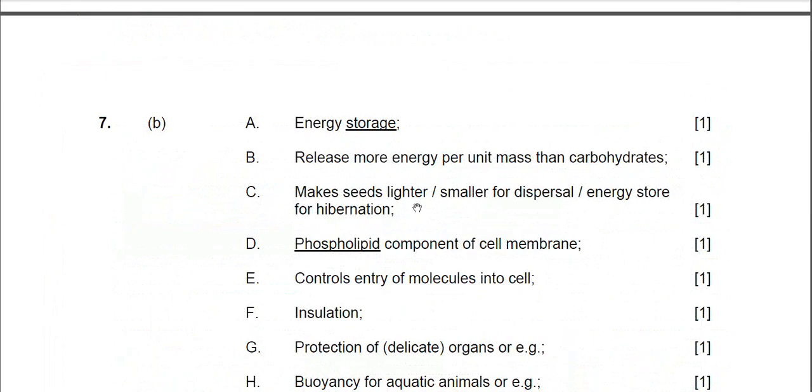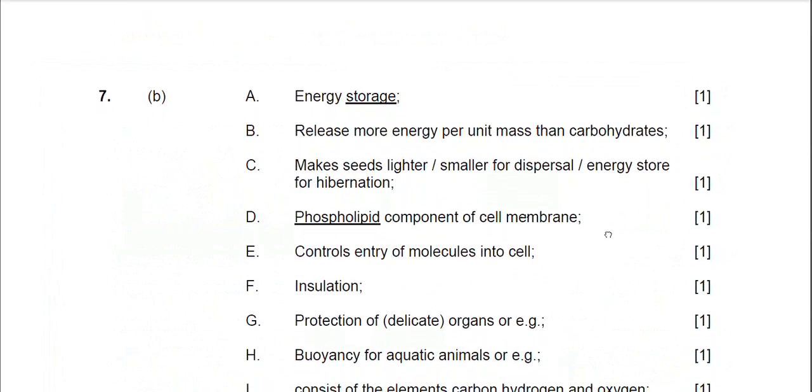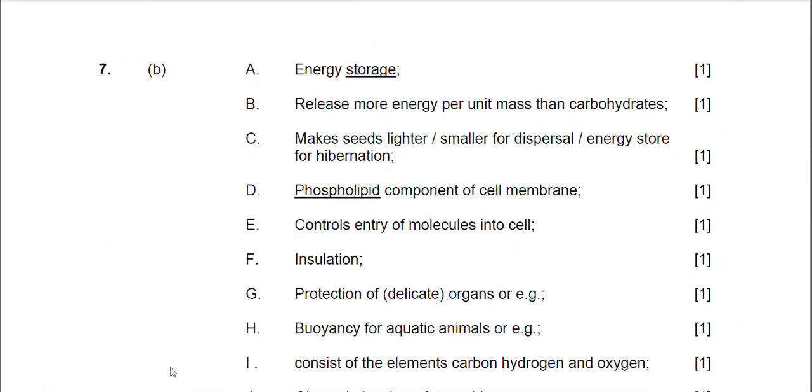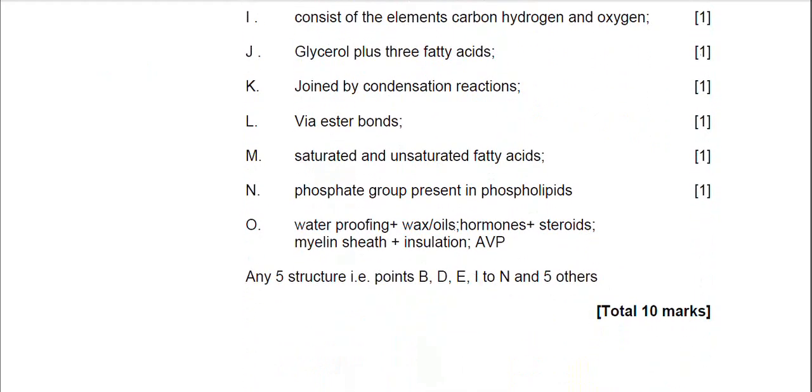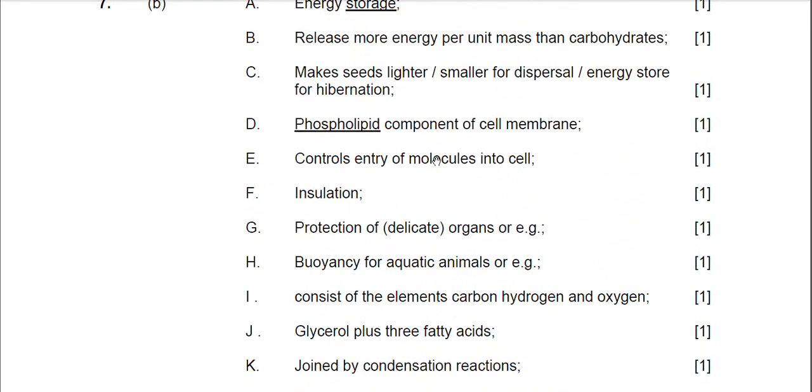So let's just have a quick look at the mark scheme. I think really the only thing I've missed out in the essay is to mention marking point I, that fats consist of the elements carbon, hydrogen and oxygen. So just remember to put that one in. Talk about the insulation, protection, buoyancy. And I've also mentioned the myelin sheath down the bottom there, and also I've mentioned the phosphate group being present in phospholipids. So not a bad essay. I think again as long as you have gone over your notes and read everything, that shouldn't have been too much of a problem.